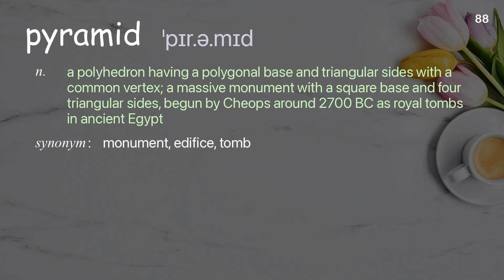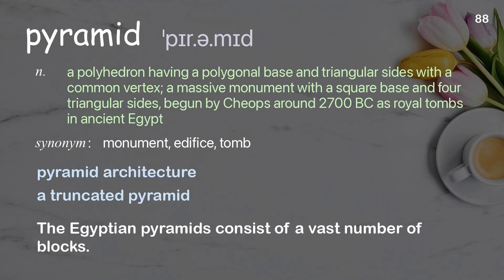Pyramid: a polyhedron having a polygonal base and triangular sides with a common vertex; a massive monument with a square base and four triangular sides, begun by Keops around 2700 BC as royal tombs in ancient Egypt. Examples: pyramid architecture; a truncated pyramid. The Egyptian pyramids consist of a vast number of blocks.